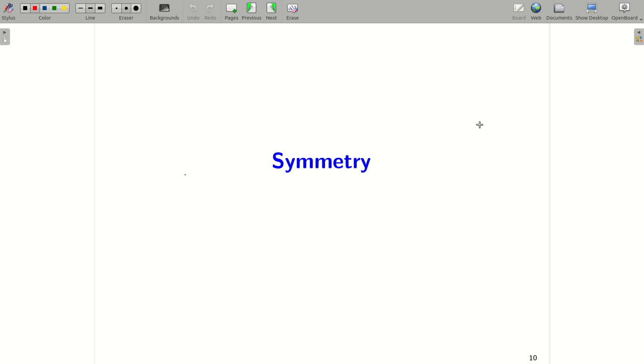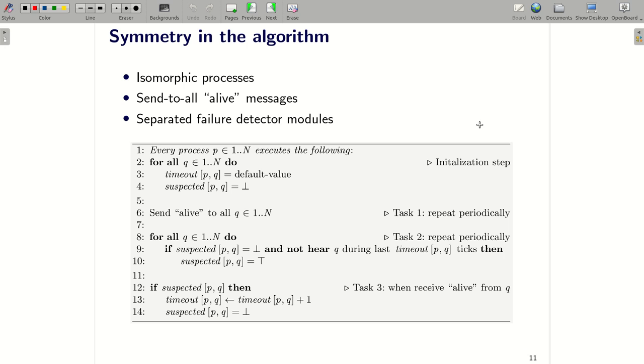So can we find an automatic verification technique for the failure detector? Before I show you how we can verify the failure detector, I would like to emphasize one important characteristic of the failure detector, the symmetry. First, let's talk about the symmetry in the algorithm. In the failure detector, every process follows the same algorithm. Therefore, they are isomorphic in the renaming.